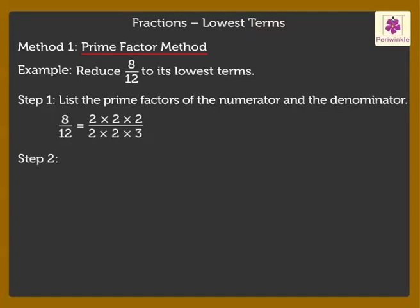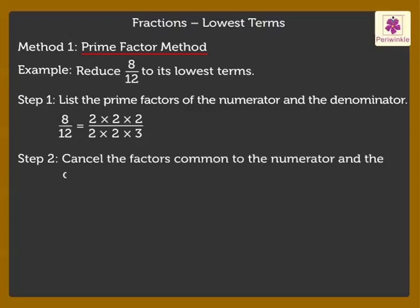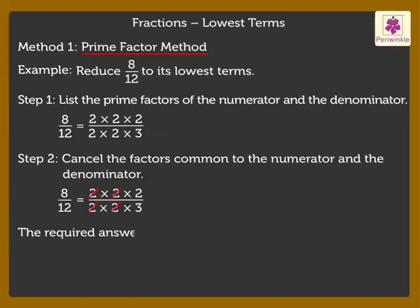Step 2: Cancel the factors common to the numerator and the denominator. Here the common factors are 2 and 2, which we cancel. The required answer is 2 upon 3.